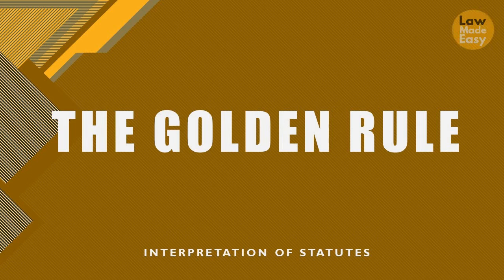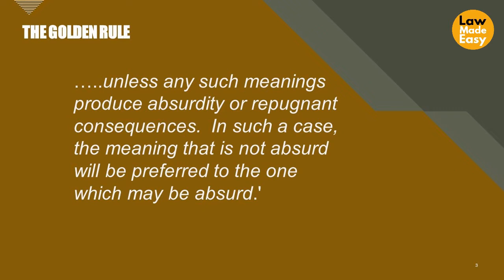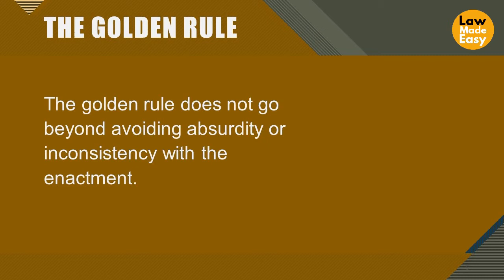The Golden Rule: where words have two or more meanings in any given legislation, they should be given their plain and ordinary meaning unless any such meaning produces absurdity or repugnant consequences — in such a case, the meaning that is not absurd will be preferred. Despite the literal rule and the judiciary's will to limit itself to plain wording, there may be cases where avoiding manifest absurdity is only possible by departing from the strict wording. The Golden Rule does not go beyond avoiding absurdity or inconsistency with the enactment and is an adaptation of the literal rule in a way.